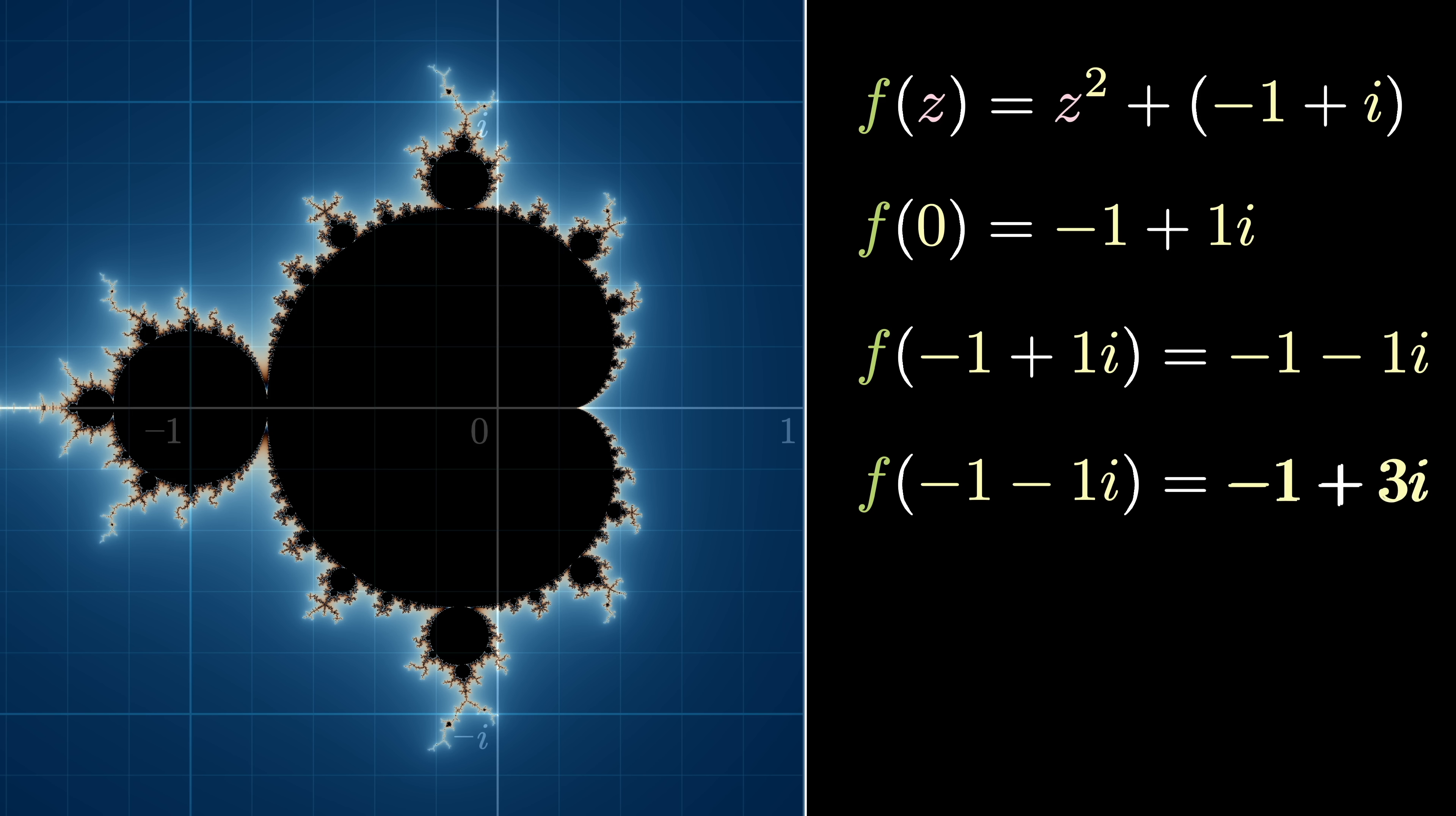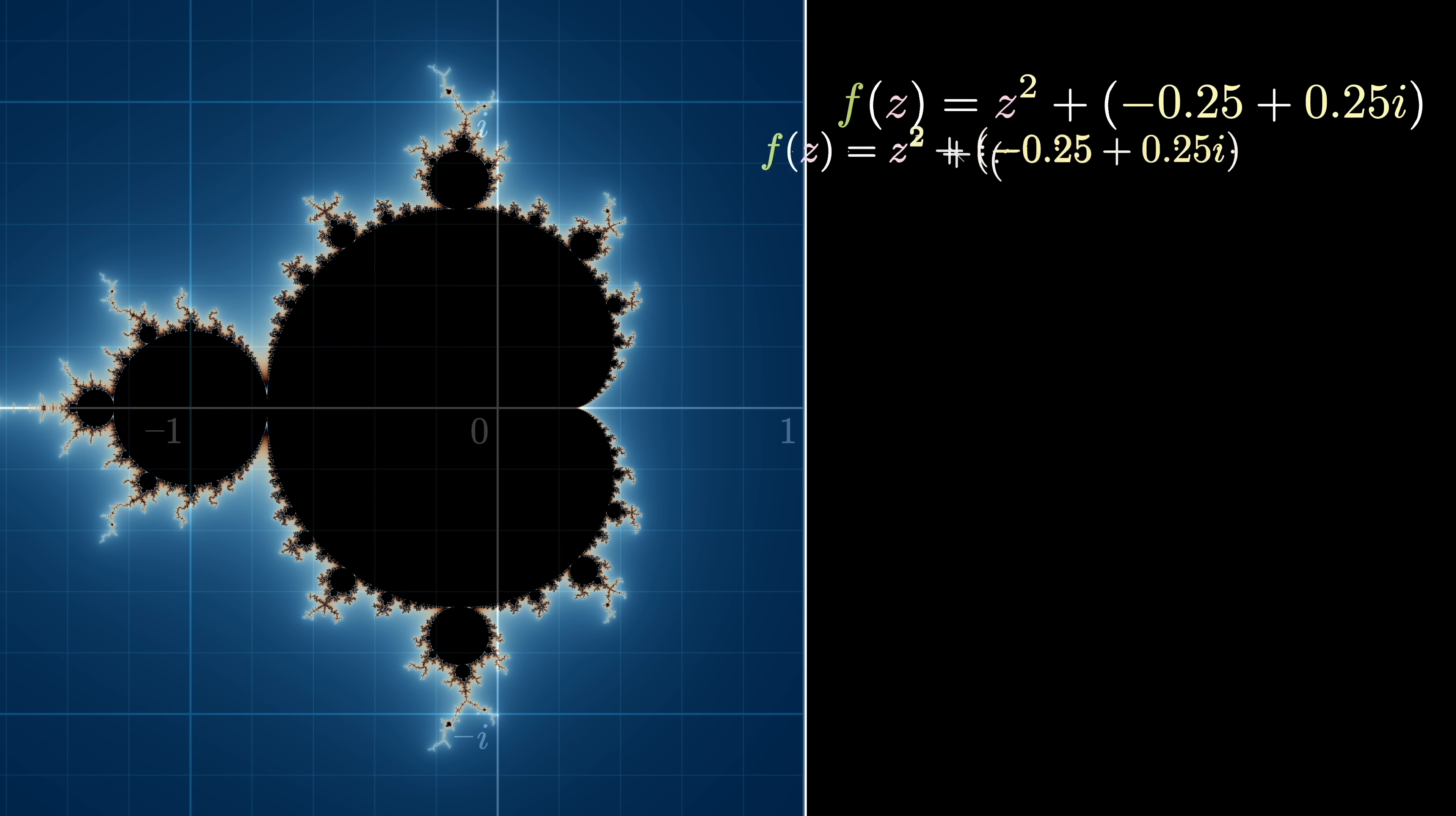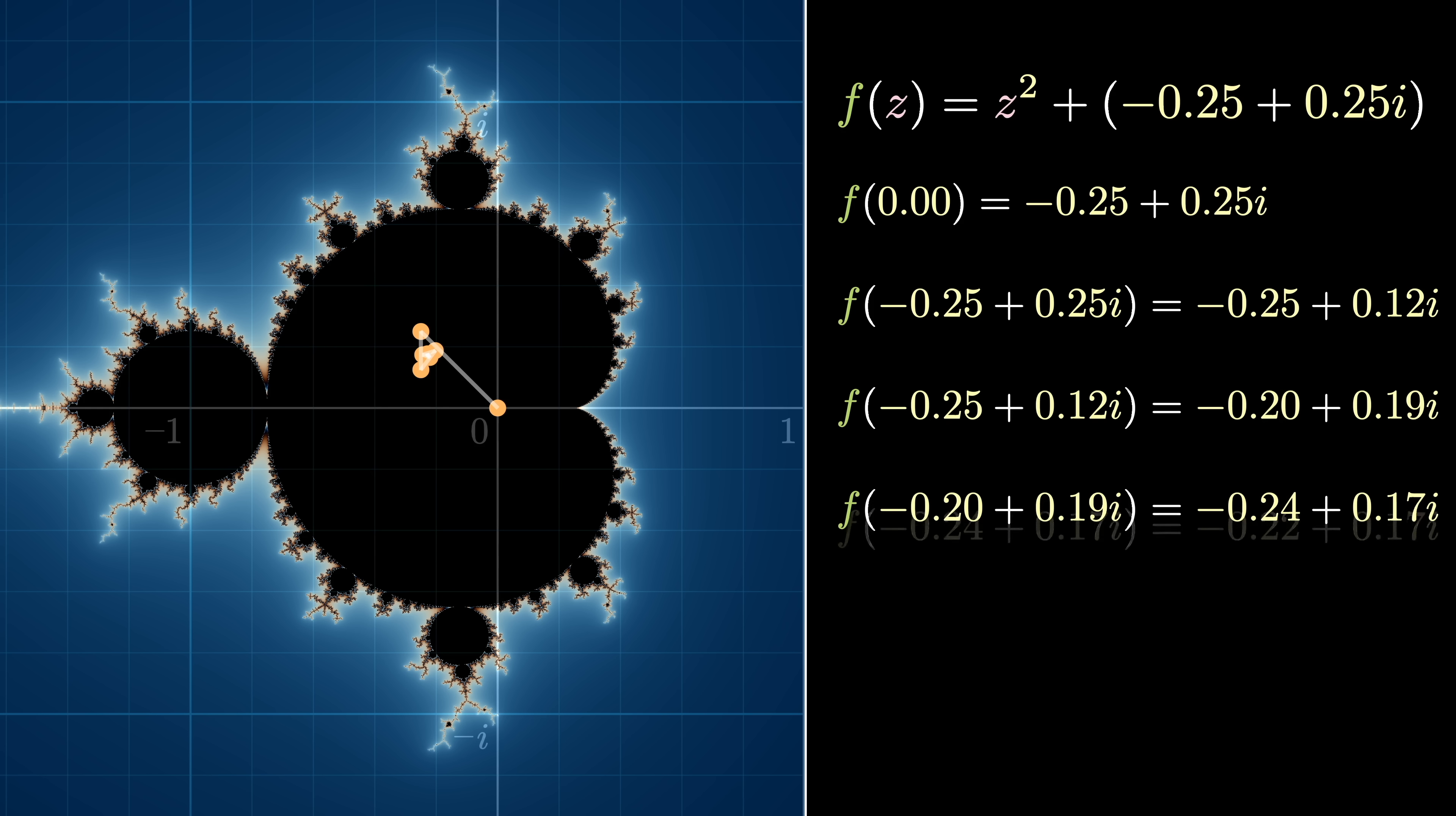So you can see how for some certain choices of c, the number explodes to infinity, like in this case with c equals negative 1 plus i. After a few steps, it's way off the plane. But for some others, it stays constrained. So for instance, with c equals negative 0.25 plus 0.25i, it actually converges to one point.